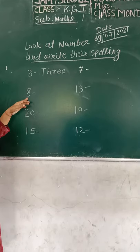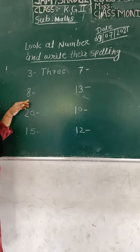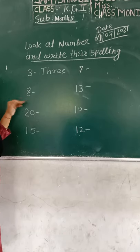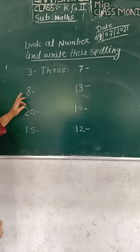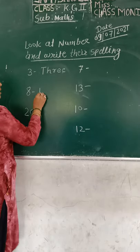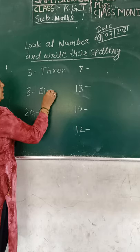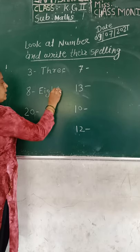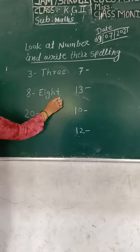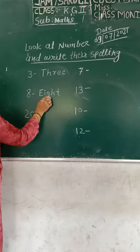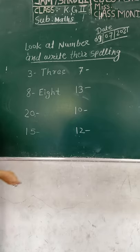Now, which number are you? Eight. Very good. Eight. Eight spelling: E-I-G-H-T. Eight. E-I-G-H-T. Eight. Okay?